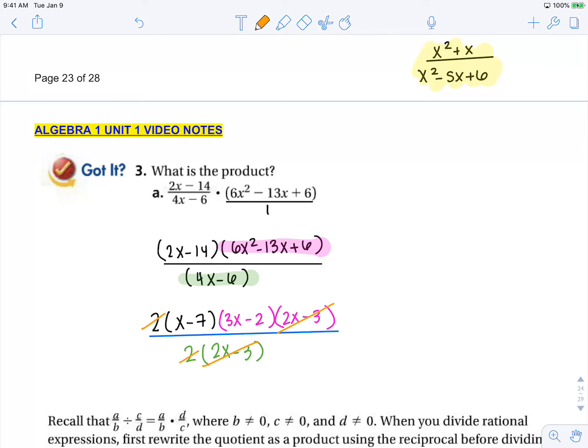and my 2x minus 3s cancel. So my final answer is x minus 7 times 3x minus 2, or if I foiled that out,